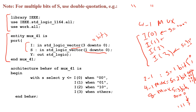The output y must have the same size as the input options. That concludes the entity part. Moving to the architecture part, which describes the relationship between the ports — defining the output as a function of the inputs. Using the 'with select' statement: with s select, monitor s and select y to be equal to i(0).